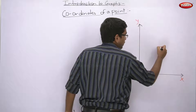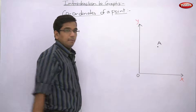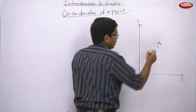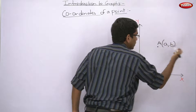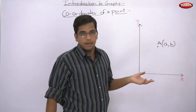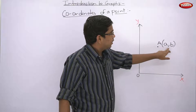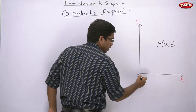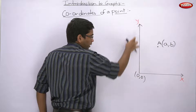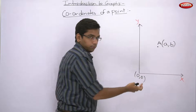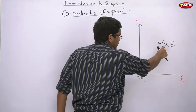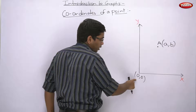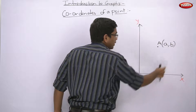If I put a point A on the graph, it has some coordinates — small a, small b. Point A has coordinates (a, b). This means point A is at origin 0,0. The origin can also be written as 0,0, where x-axis is 0 and y-axis is 0. So origin is (0, 0). Point A's coordinate is (a, b).